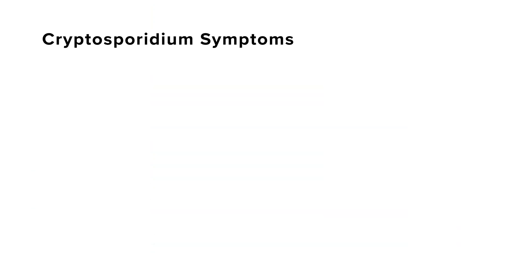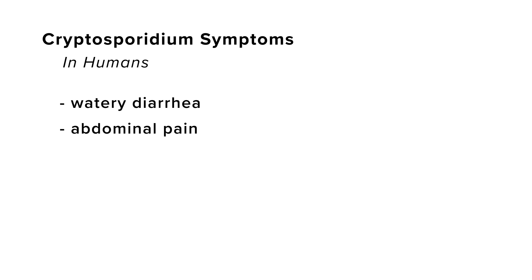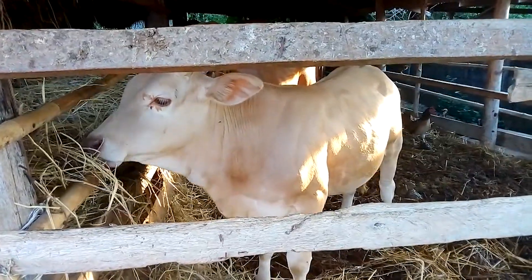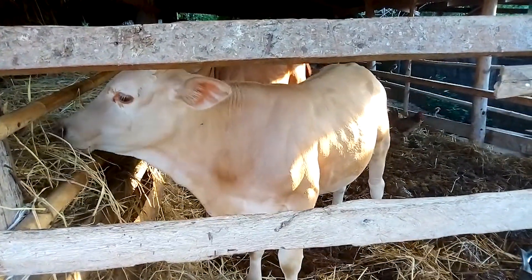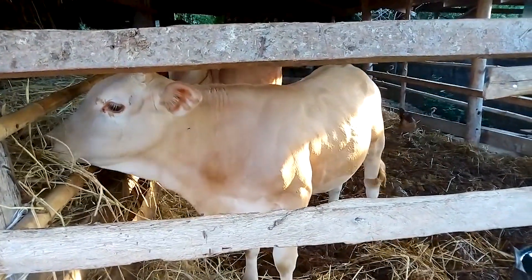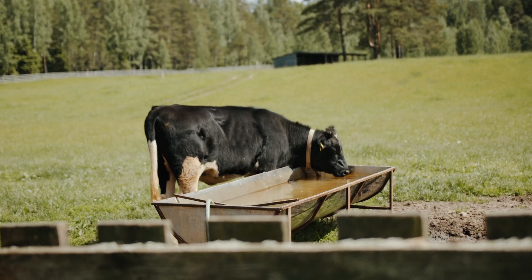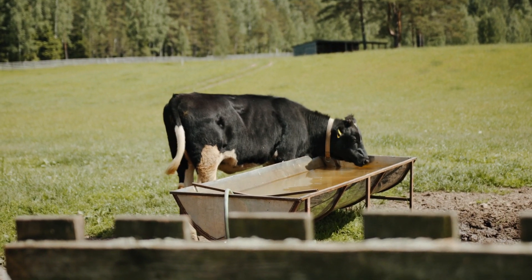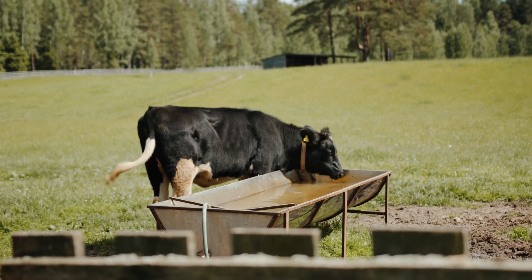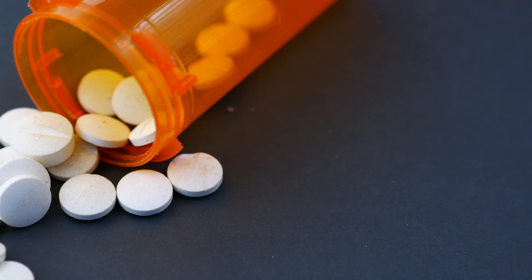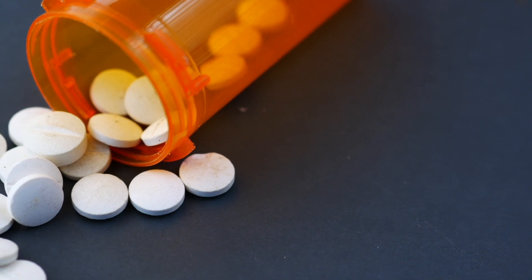Symptoms in humans may include watery diarrhea, abdominal pain, vomiting, and nausea. Animals may not show symptoms when infected with crypto, but if they do, they would have mild diarrhea. Treatment for crypto can include supportive care, such as making sure to have plenty of drinking water and plenty of rest. Another treatment that can be used is an antidiarrheal drug.